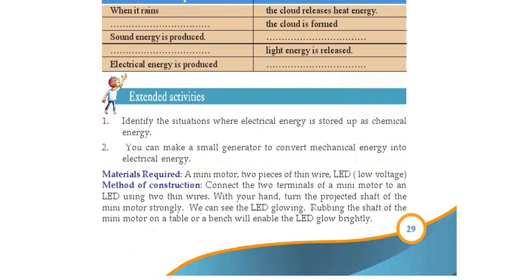This is an extended activity. Identify the situation where electrical energy is stored as chemical energy. When we charge a power bank, electrical energy is stored in it. So that is an example of electrical energy being converted to chemical energy. Similarly, a storage battery also converts electrical energy to chemical energy.